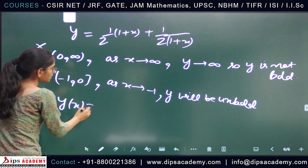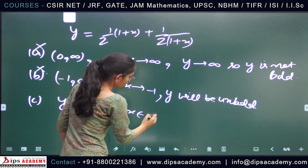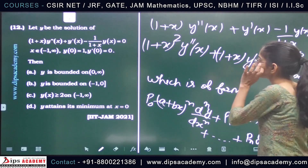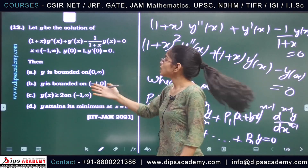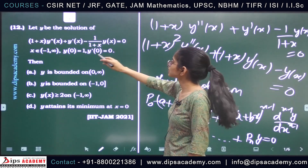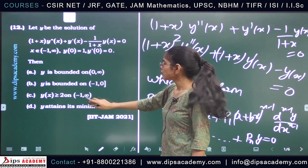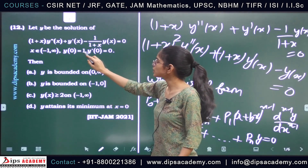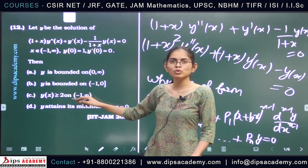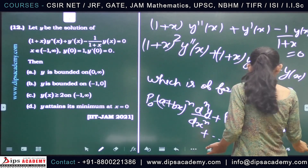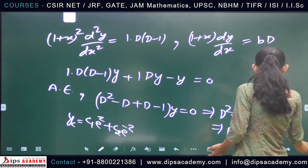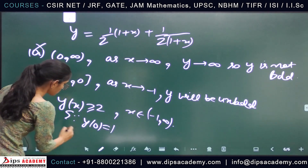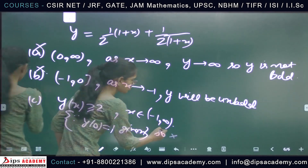Option C says y(x) ≥ 2 for x ∈ (-1, ∞). But from the initial conditions, y(0) = 1 is given, and 0 belongs to this interval. Since y(0) = 1 < 2, this directly contradicts the option. So option C is incorrect from the problem statement itself.